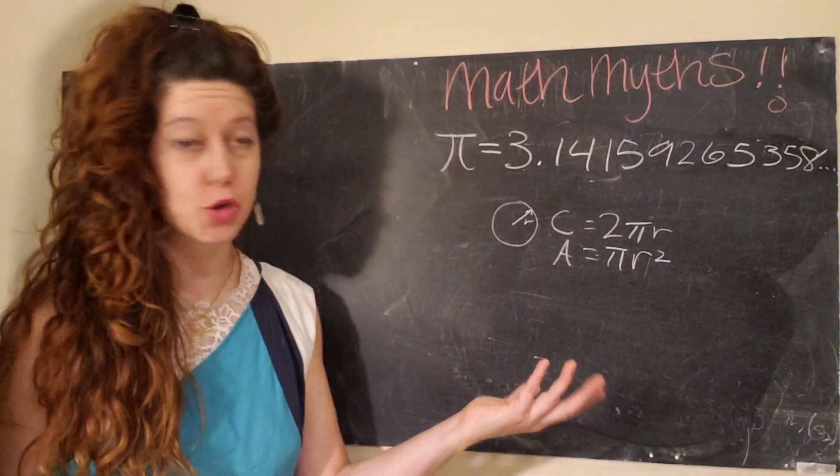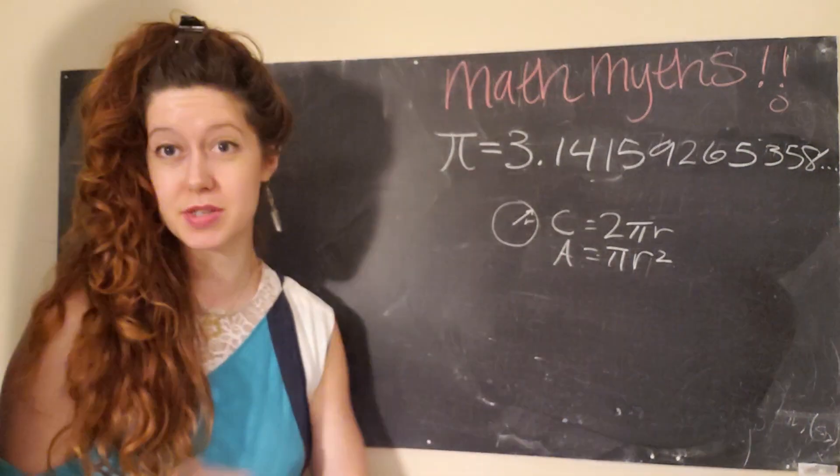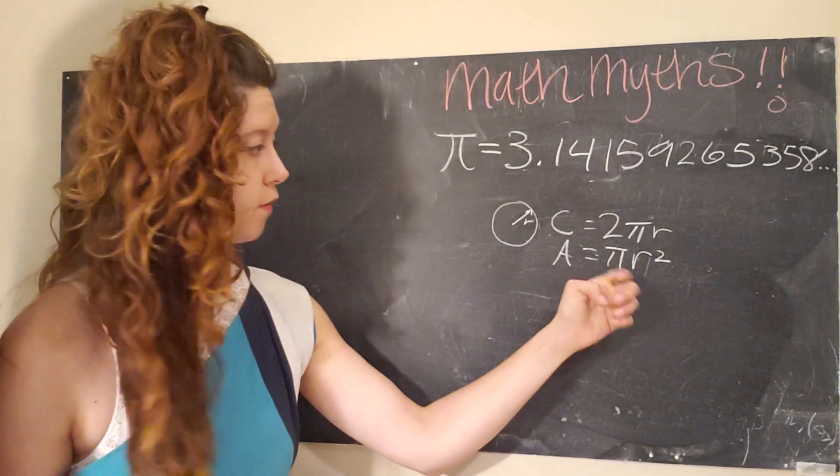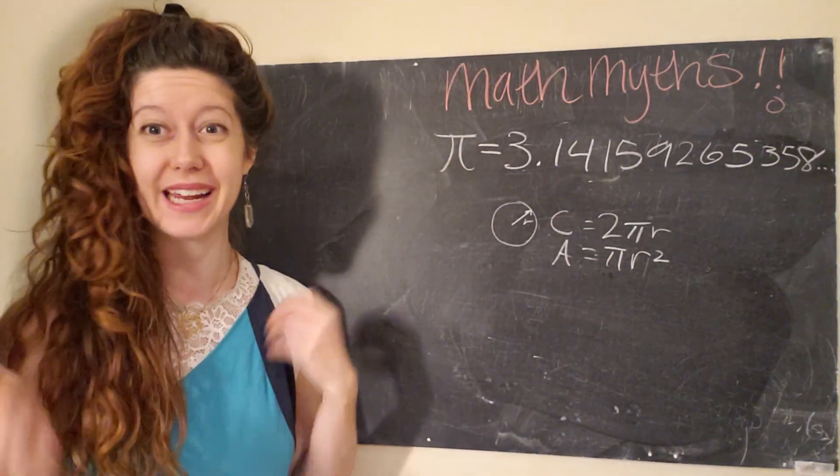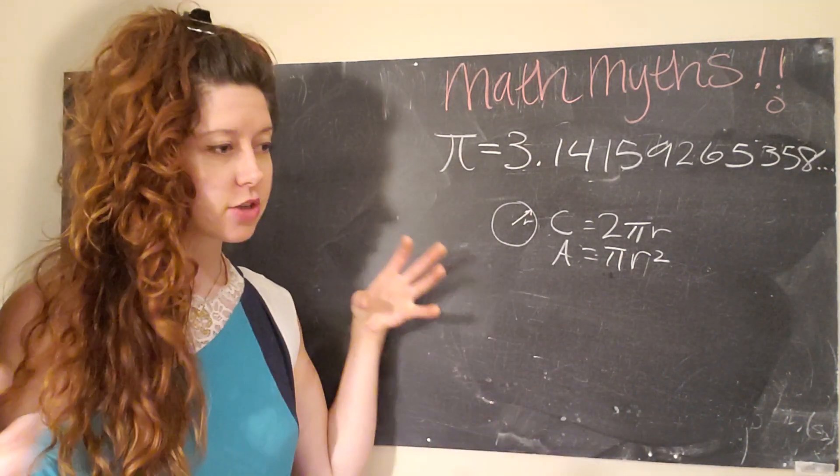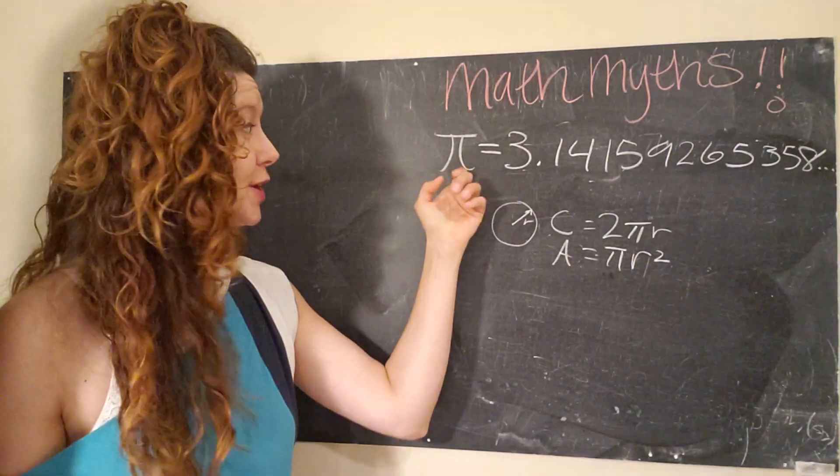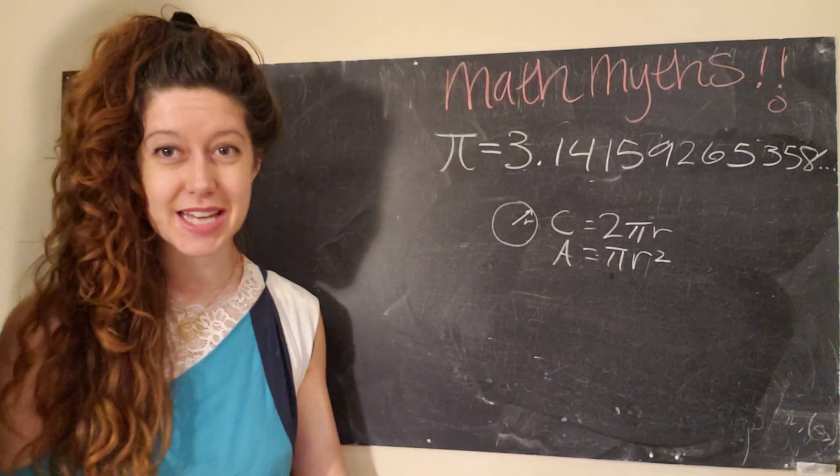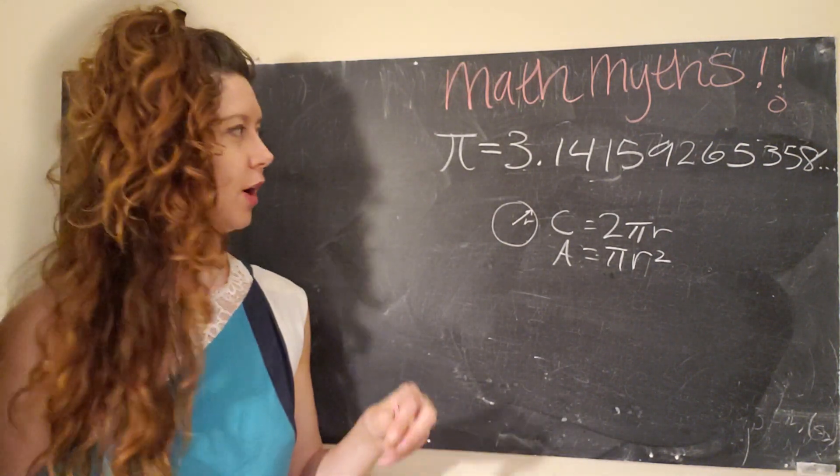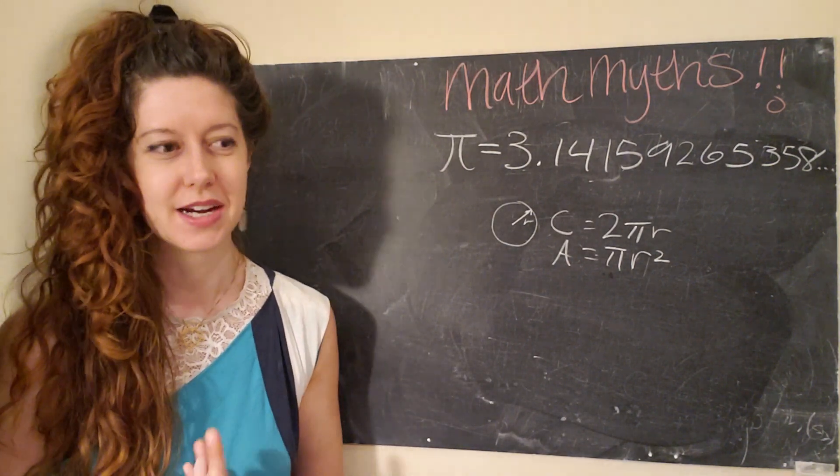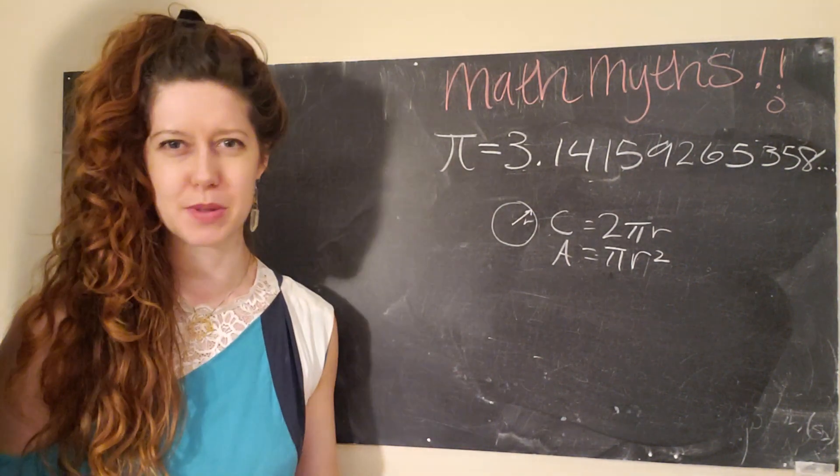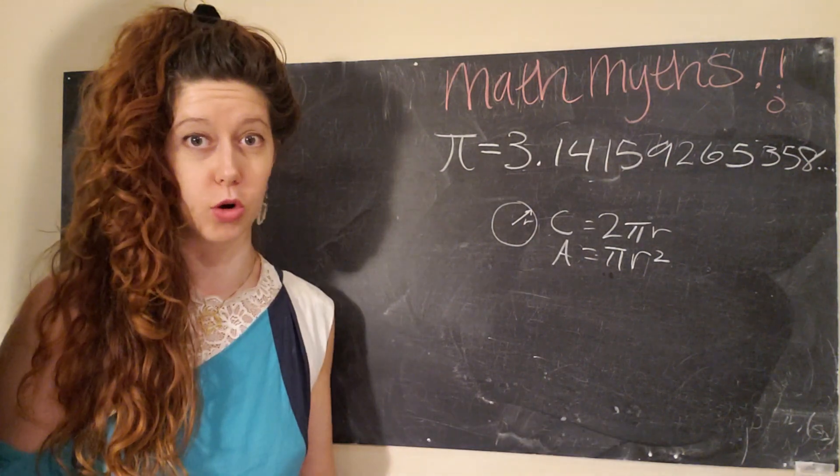And this is true of all circles, and mathematicians thousands of years ago have been able to find this number, which is a constant, meaning it never changes. So even as your circle grows and shrinks, this constant stays the same, which is pretty wild. And it starts to hint at some of the things that I love about math and physics. Constants are a very bizarre concept in our world.